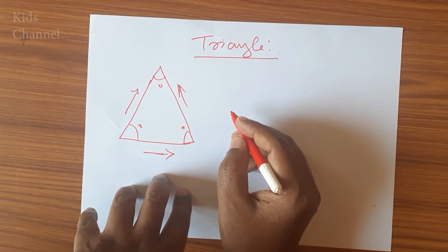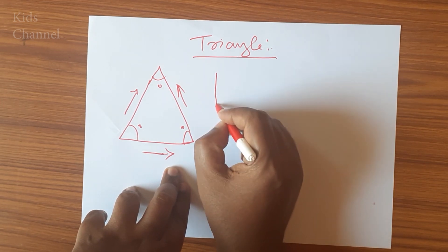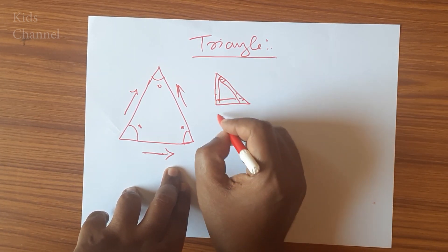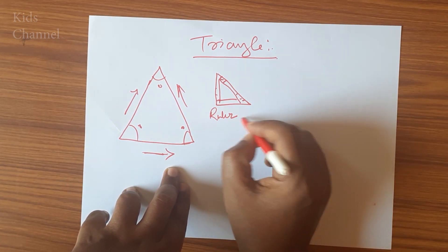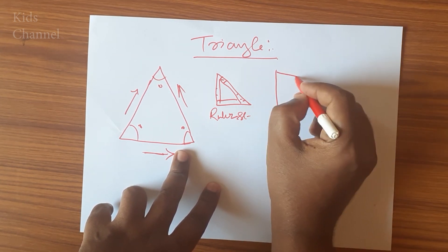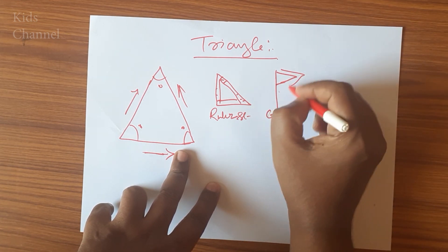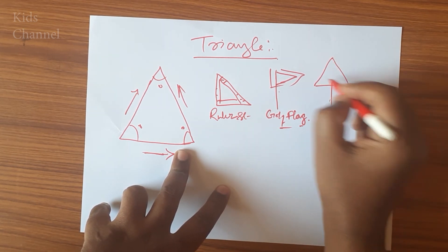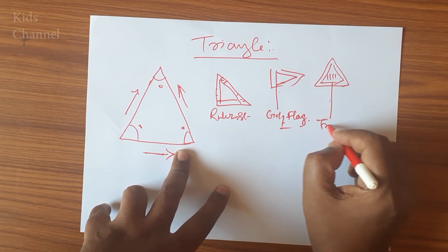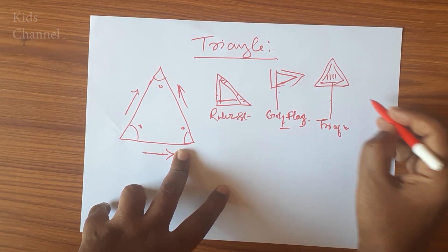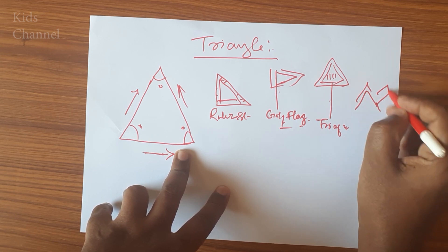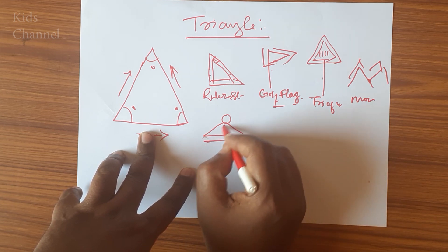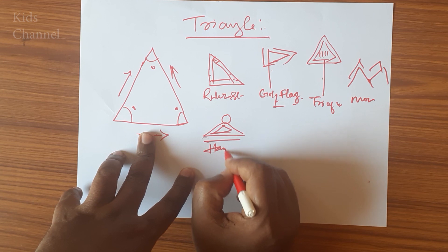Now we will see some objects that look like a triangle. A ruler set in a geometry box looks like a triangle. A golf flag looks like a triangle. A traffic sign looks like a triangle. A mountain also looks like a triangle. And hangers used in your wardrobe also look like a triangle.